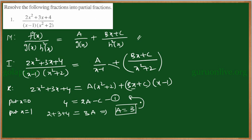Substituting A equals 3 into equation 1: 4 equals 2 times 3 minus C, which gives 4 equals 6 minus C. Bringing minus C to one side and 4 to the other: C equals 6 minus 4, so C equals 2.